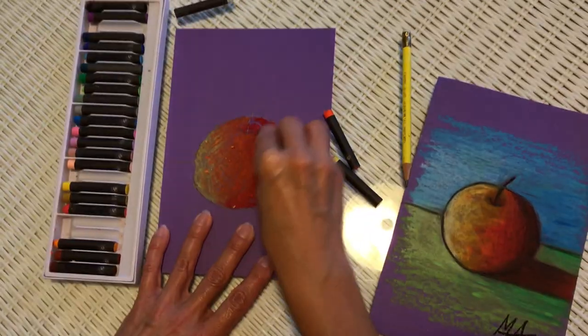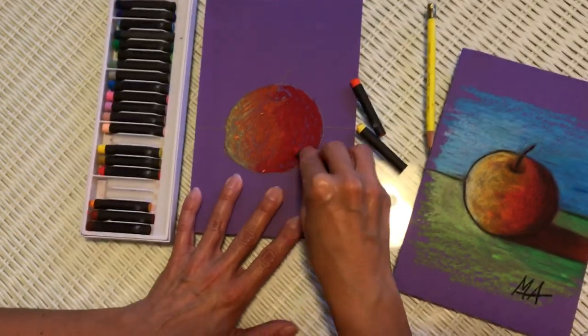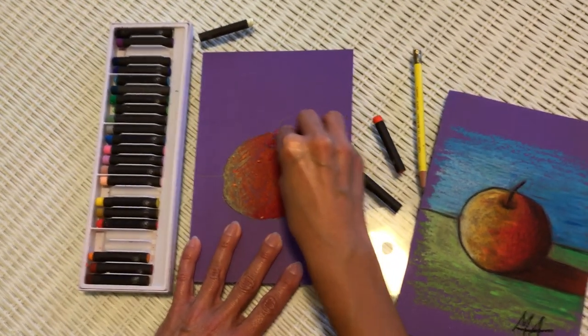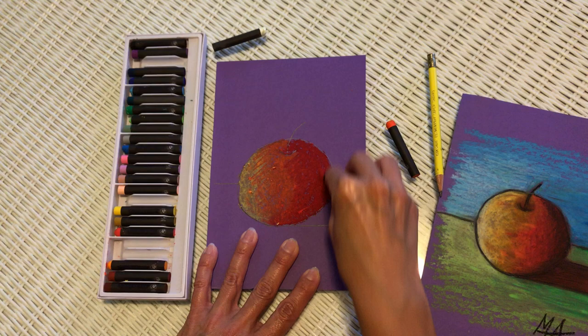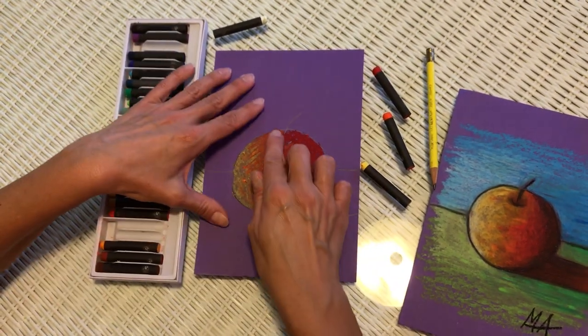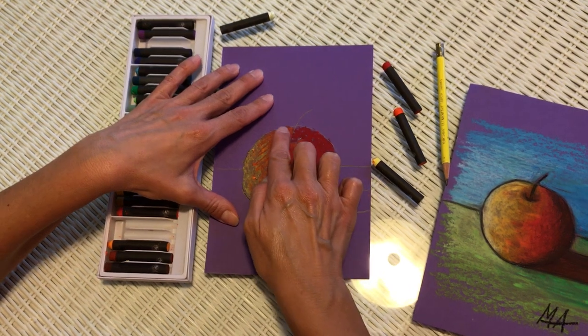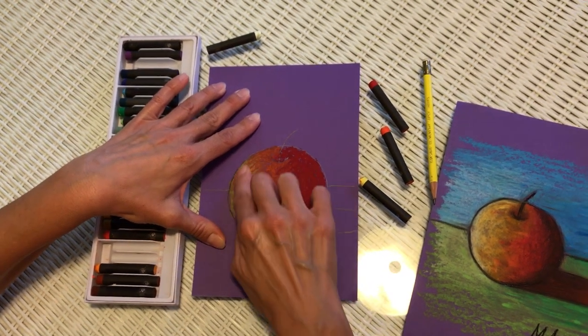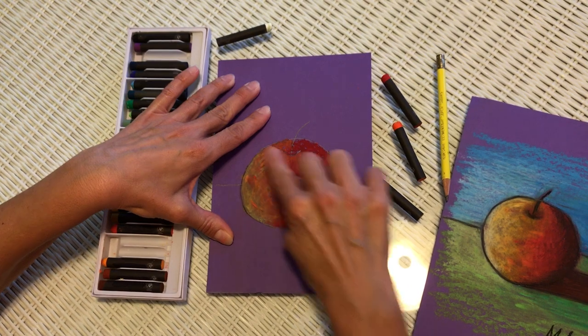And with the dark color over the medium color so that the color will blend a little bit more. Now I can use my finger to blend the colors in even farther following the direction of the shape of the object.